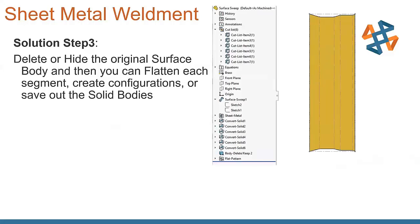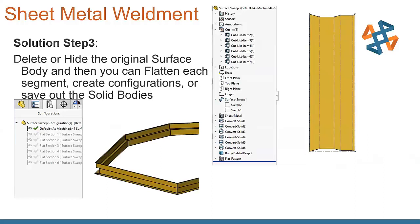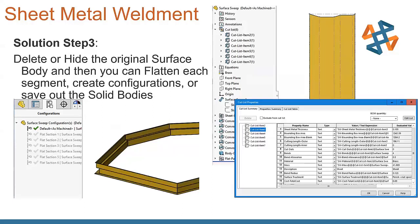And then you can turn around and flatten each segment, or you can turn around and create configurations so that you can see each individual section there, or you can save off the solid bodies. The nice thing about this, each item is still listed as a cut list item. You get all the sheet metal properties, all the bounding box area, everything that you need to turn around and manufacture this part. And once again, saved inside of one single part file. It's a nice way, especially if you have to go back and do any changes later on.